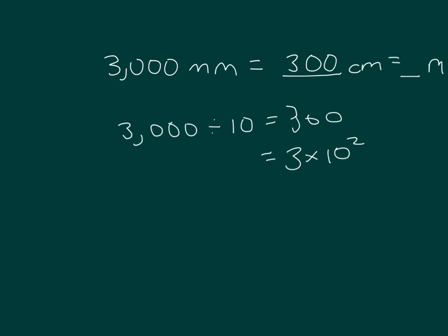300 centimeters, well, 100 centimeters equals 1 meter. To get from centimeters to meters, then, we divide by 100. 300 divided by 100 is equal to 3. So we've gone from a smaller unit to larger units. There's 10 millimeters inside of a centimeter. There's 100 centimeters inside of a meter.